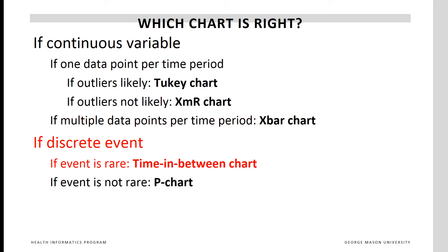If the measure is discrete and the event is rare, then use time in between charts. If the measure is discrete and the event is not rare, then use p-charts.